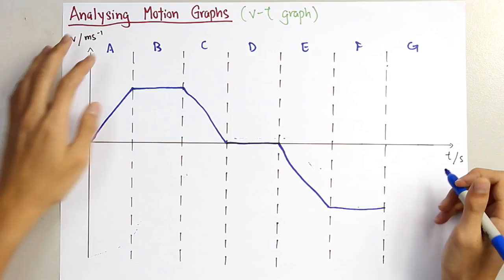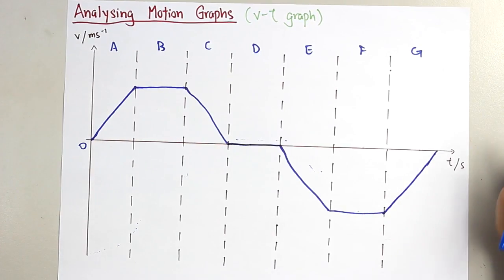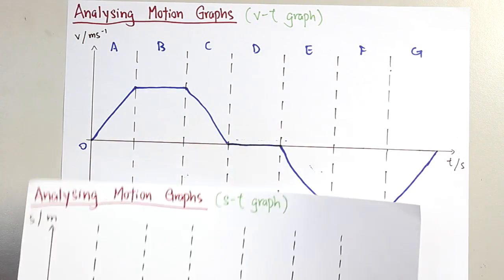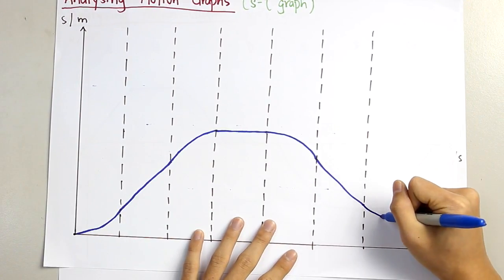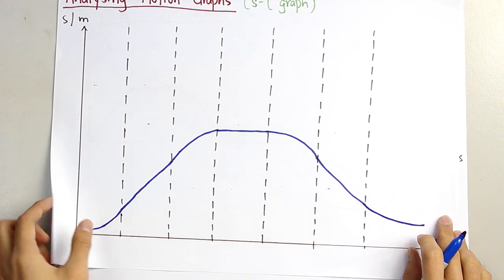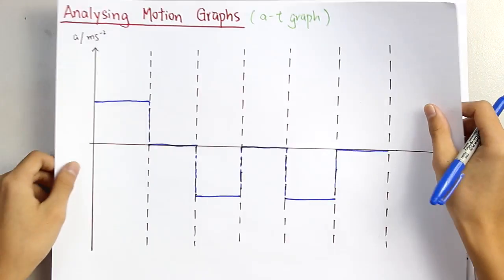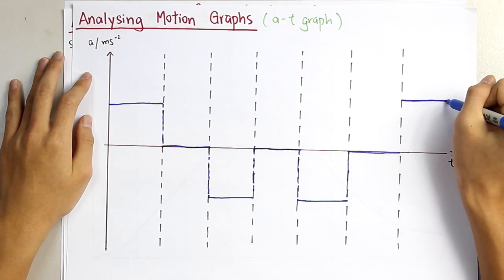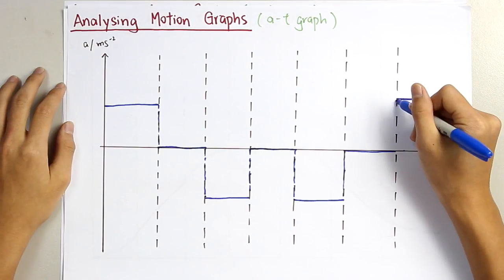And the last section, section G: a straight line towards zero. This shows that even though it's moving in the opposite direction, it is slowly getting slower and slower. As it is a positive gradient, it will become flatter because it's moving towards zero. Whereas for acceleration, since it is moving towards the zero line, it will be a negative deceleration, or you can say acceleration.